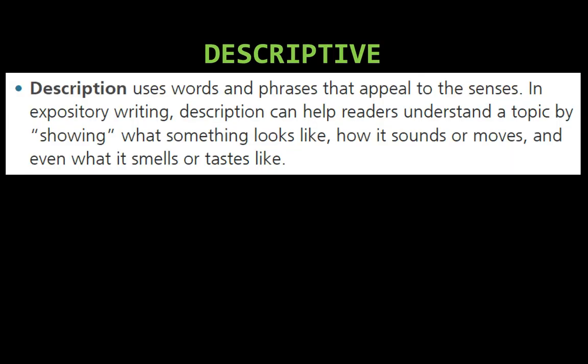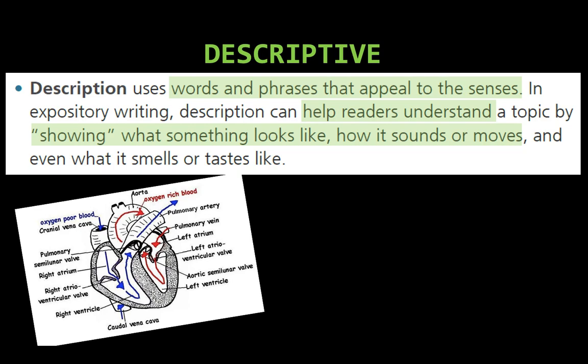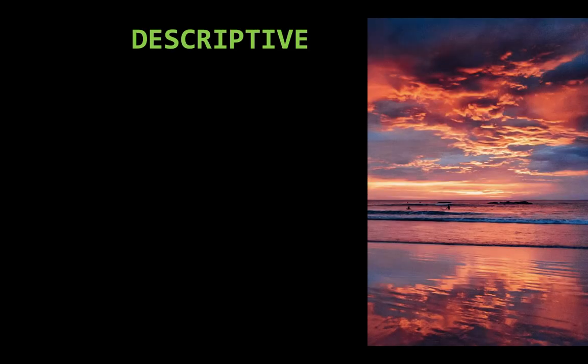With descriptive writing, the author uses words and phrases that appeal to the senses. This is when we typically show, not tell, the reader what something sounds like, looks like, or what it smells or tastes like. You might need to describe how blood moves through the heart if you're writing a science paper, or maybe you're describing a beautiful scene on a beach.